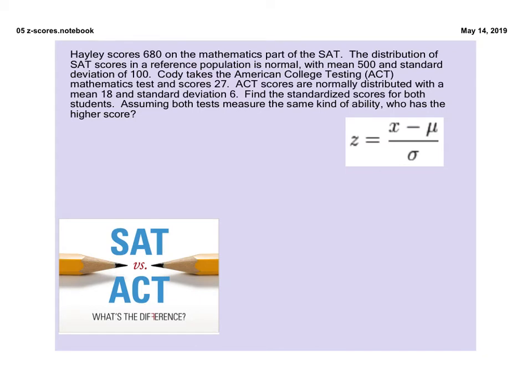Okay, so here's that problem that I referenced. So Haley scores a 680 on the math portion of the SAT, and the SAT scores are on a normal distribution. The mean or the average is 500, and the standard deviation is 100. So Cody takes the ACT test and scores 27 on the math portion. And again, we have a normal distribution with the ACT. The mean is 18, the standard deviation is 6.